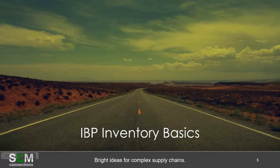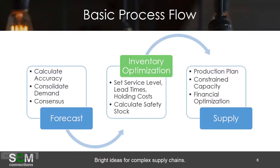So first, the Inventory Basics. It's important to understand the basic process flow and where Inventory Optimization fits into the process. In our example, the easiest way was to first figure out the forecast, come up with a consensus demand, then do Inventory Optimization, and then calculate your supply. It's kind of splitting S&OP in half.